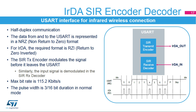The USART only supports bitrates of up to 115.2 kilobits per second for the SIR encoder/decoder. In normal mode, the transmitted pulse width is specified as 3/16ths of a bit period.